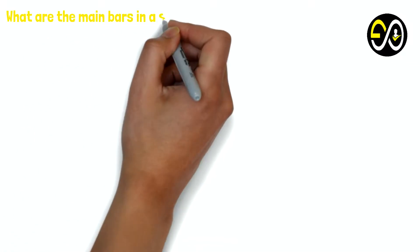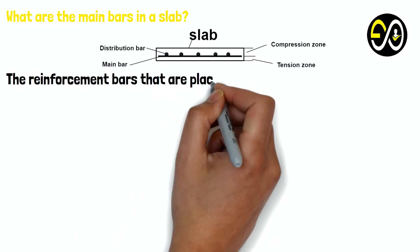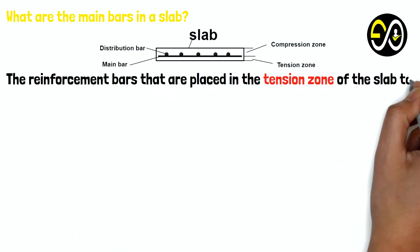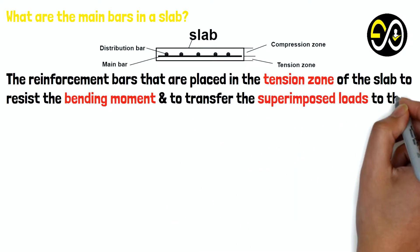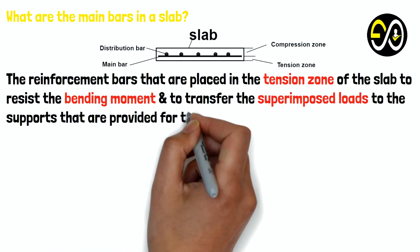What are the main bars in a slab? The reinforcement bars that are placed in the tension zone of the slab to resist the bending moment and to transfer the superimposed loads to the supports that are provided for the slab are called main bars.